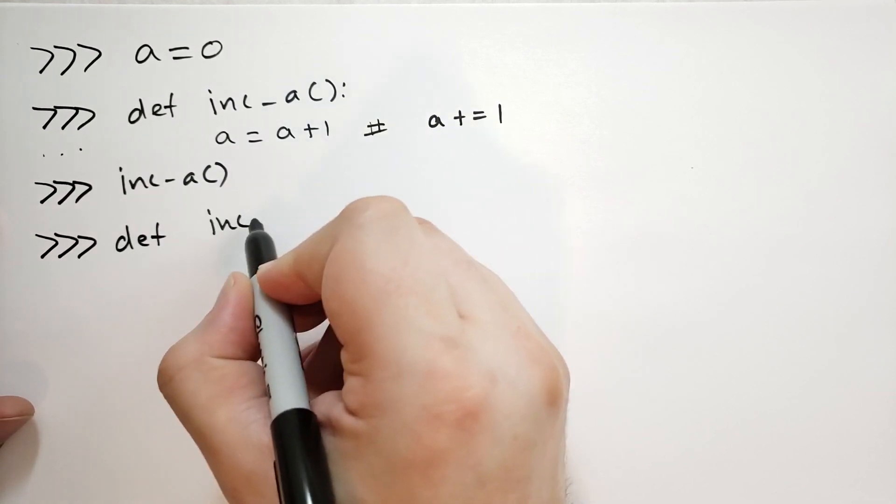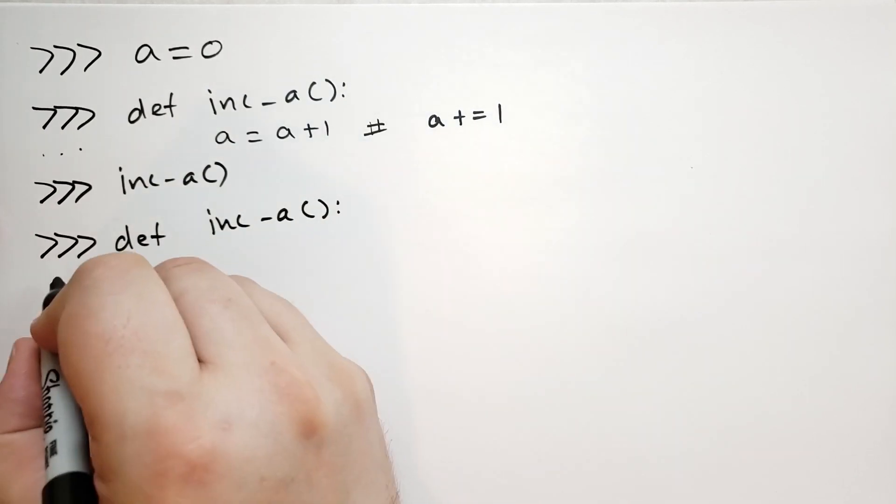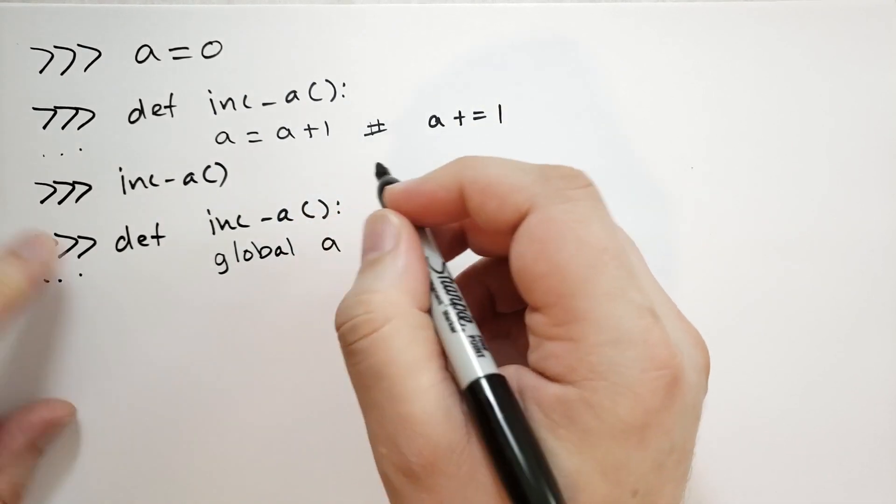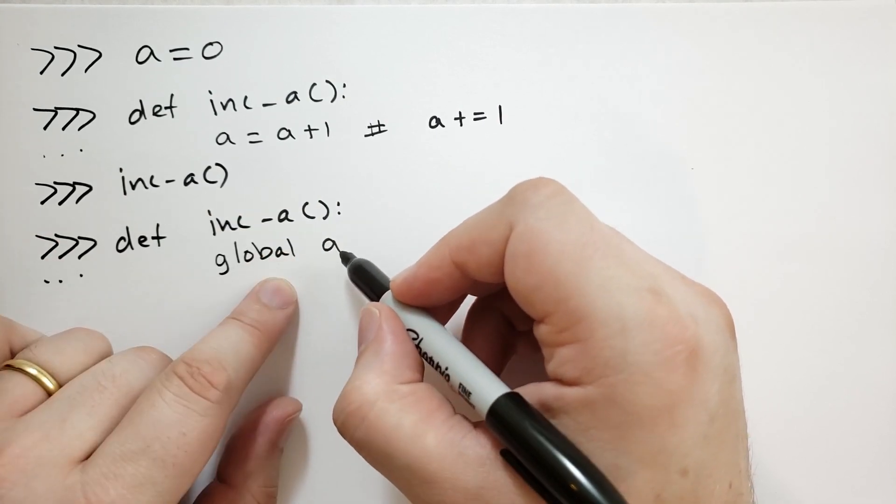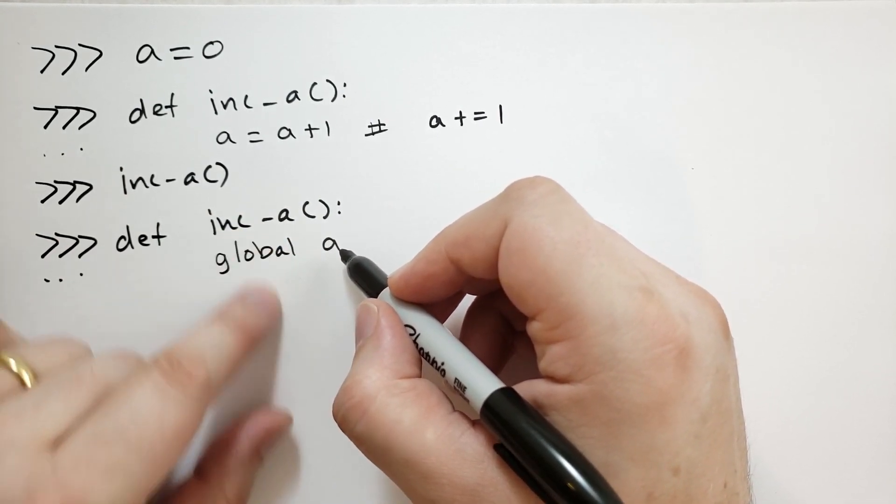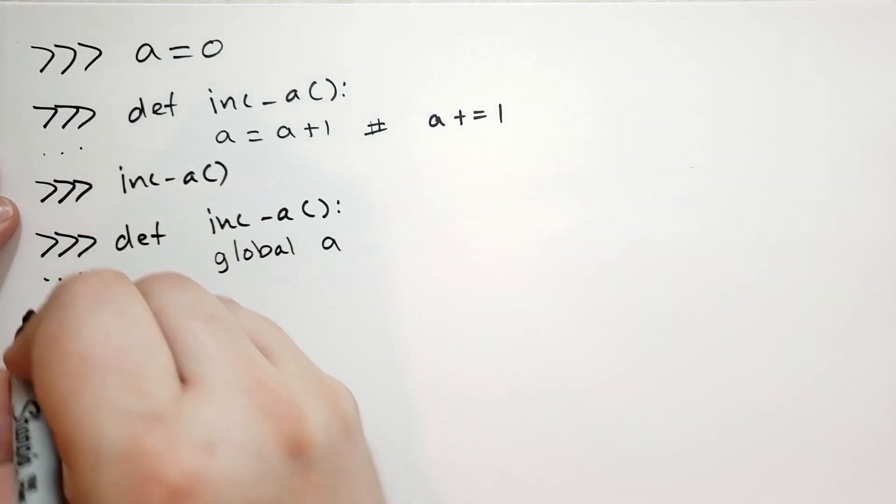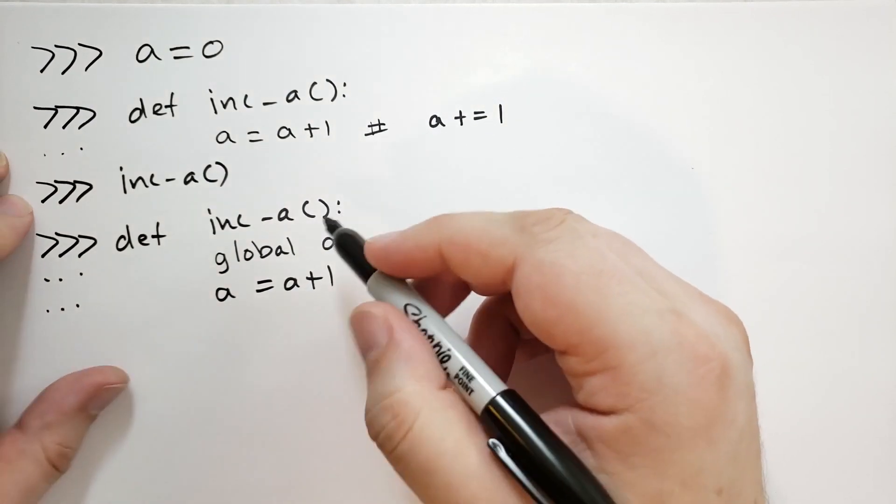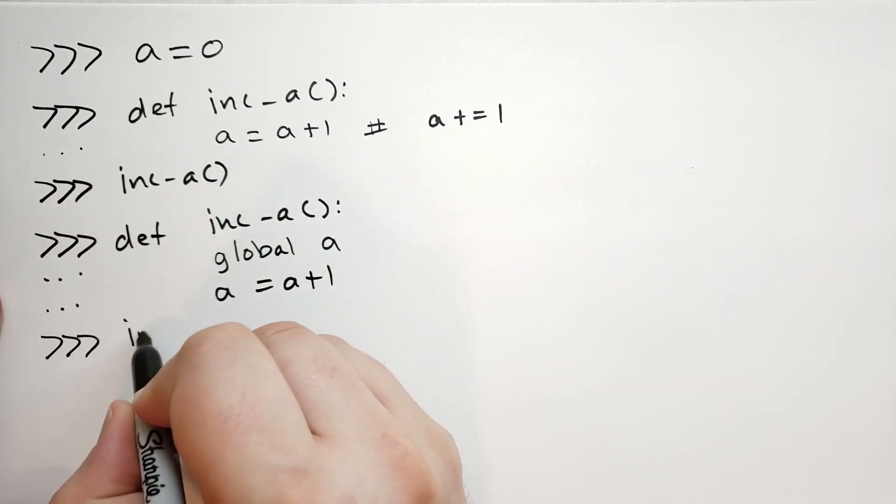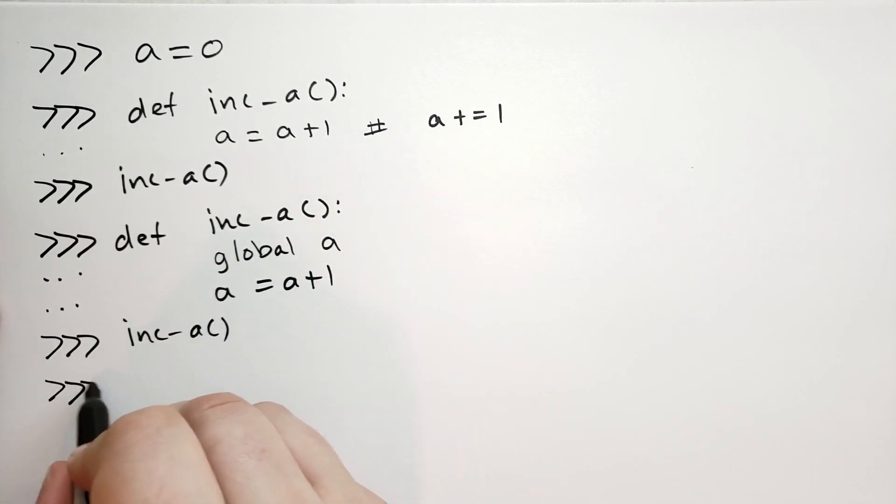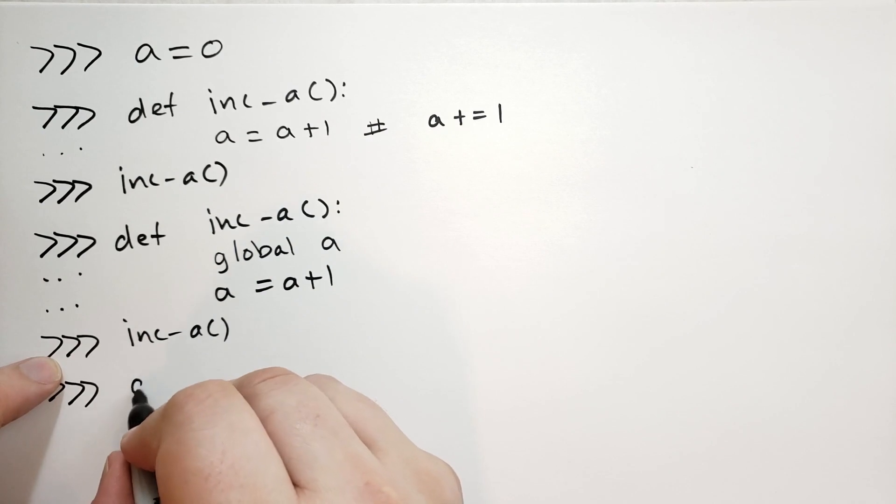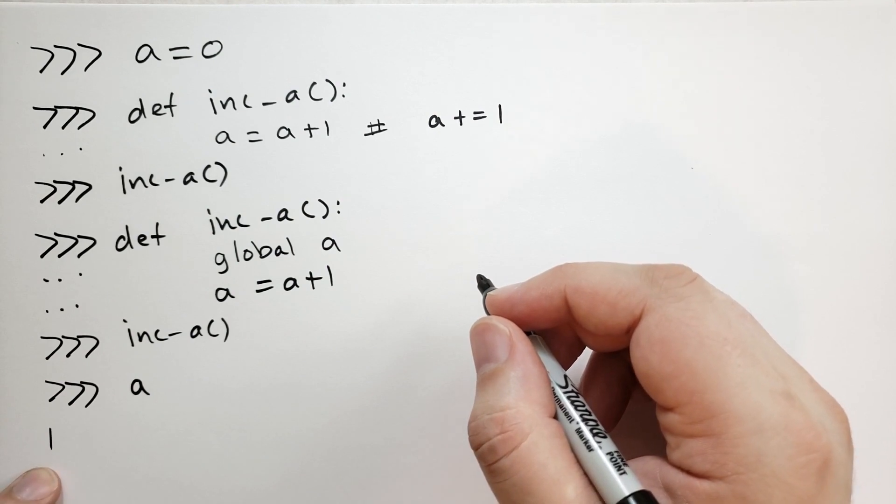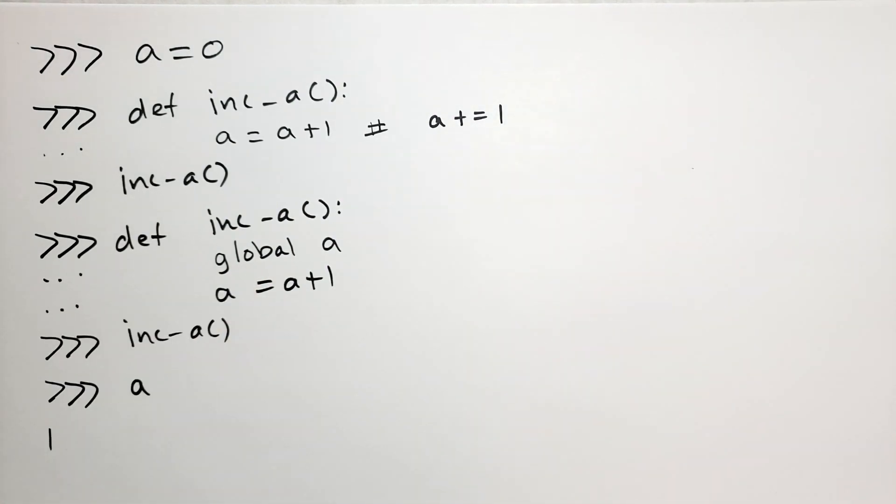So you'd say def inc A, and then dot, dot, dot, four spaces. You would say global A. And this statement here says that in this function body, in this local scope, A is not the local A, but it is the global A. And then we'll do A equals A plus 1. And so in this case, when you call inc A, it's going to do what you think. Since it returns none, there's no response, and then if we type in A here, it should show you 1. And if you call inc A again and look at A again, it should be 2. So that's what the global statement does. A very important statement.